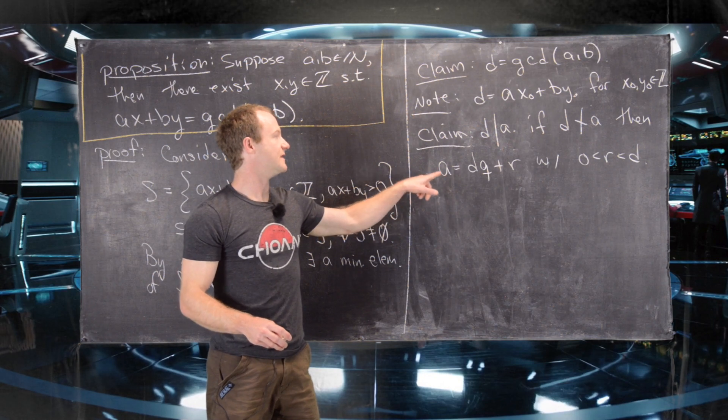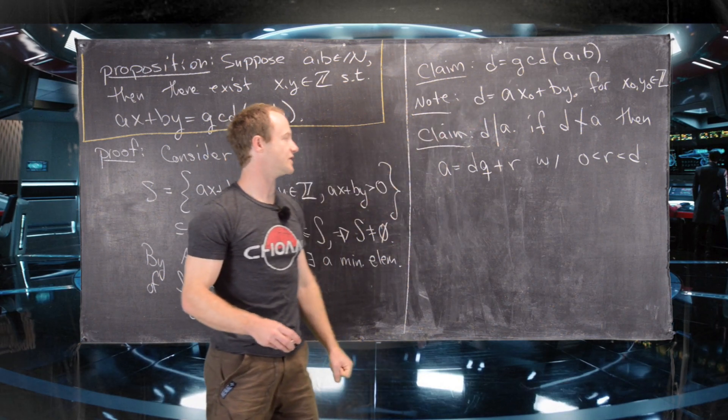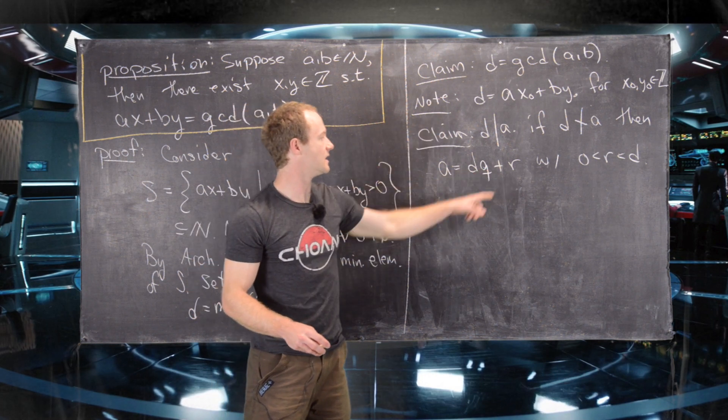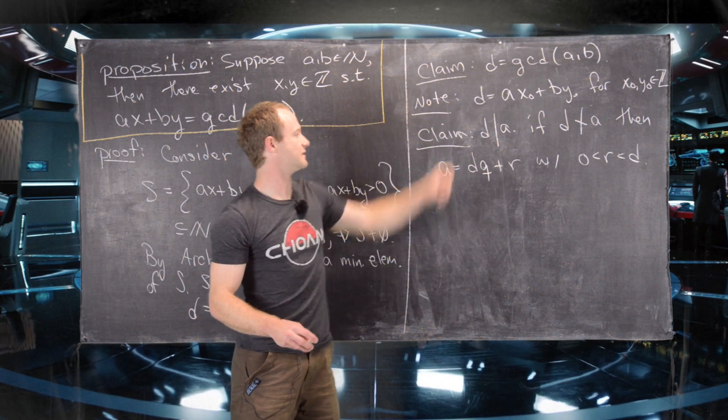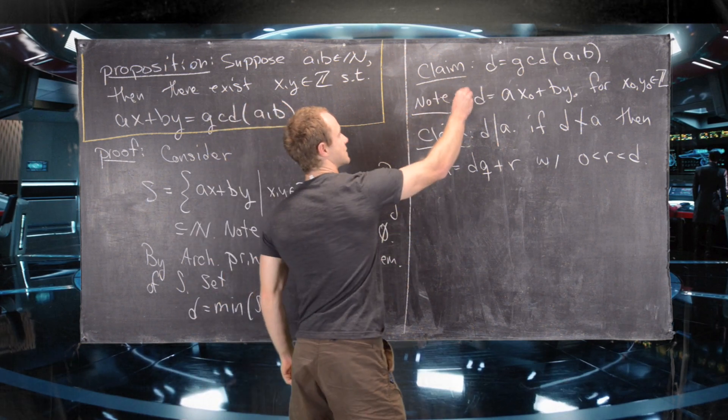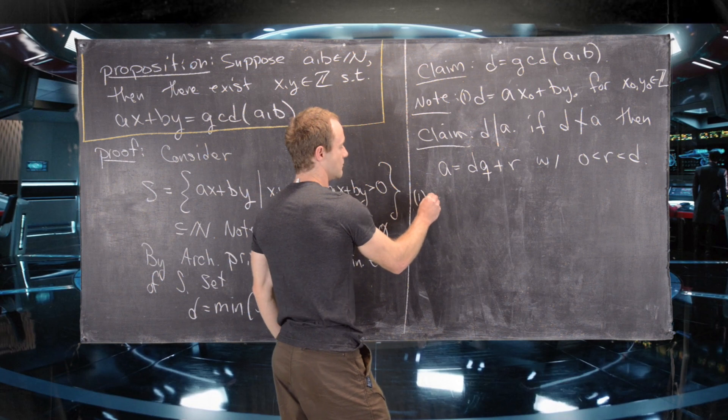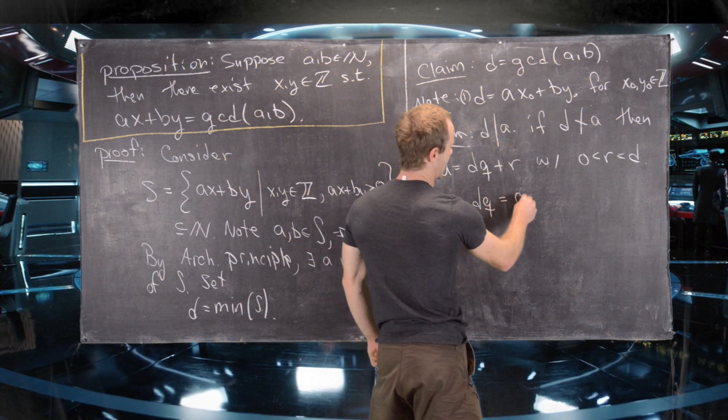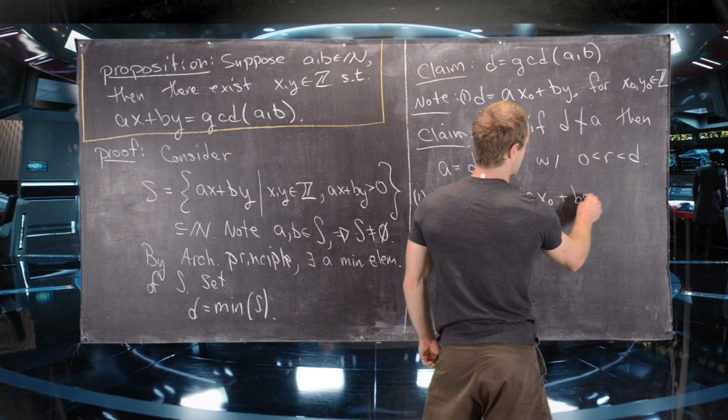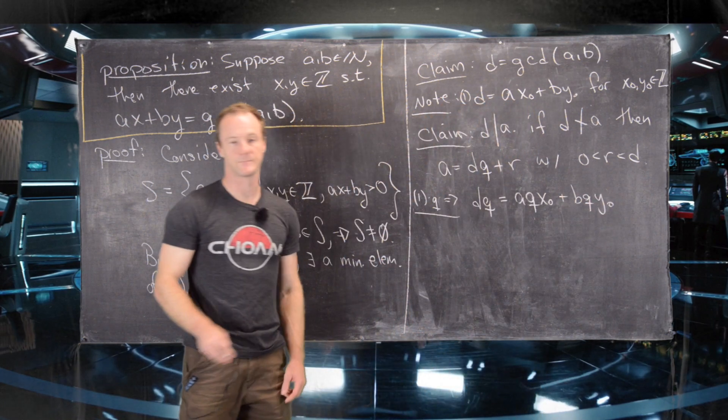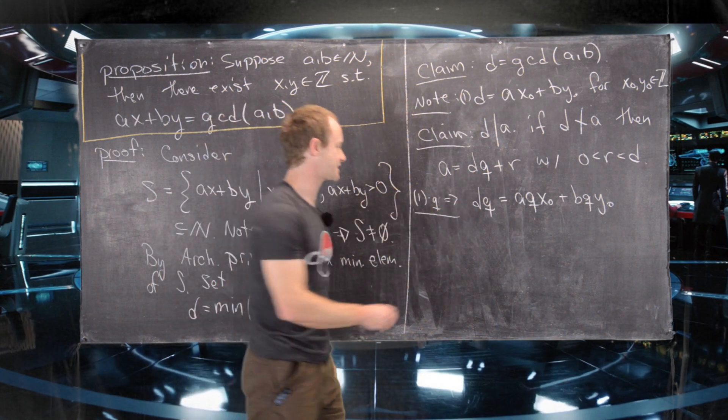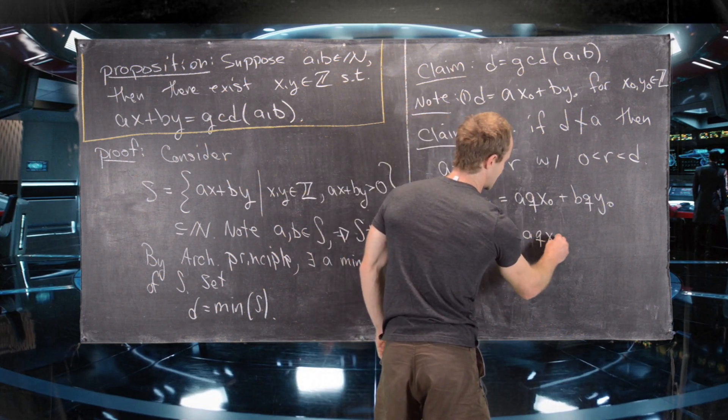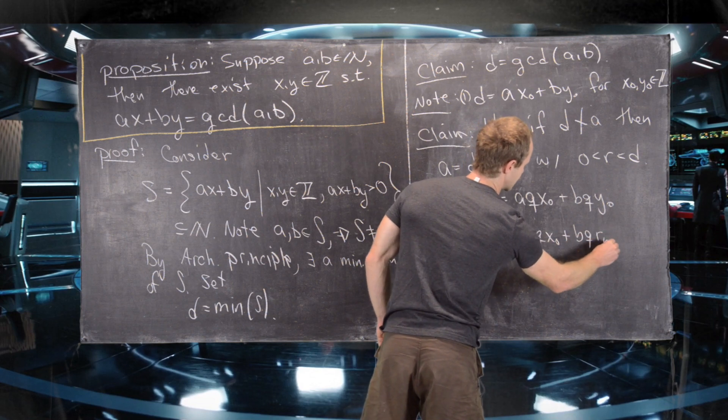So now what we want to do is multiply this equation by Q and then insert this into this equation. So if we multiply this equation by Q, multiplied by Q will give us the following. DQ equals AQX0 plus BQY0. But now we can write DQ as A minus R. So that tells us that A minus R equals A times Q times X0 plus B times Q times Y0.